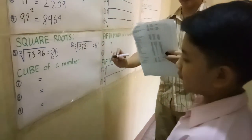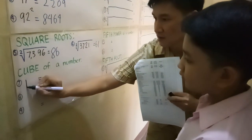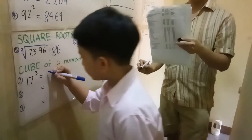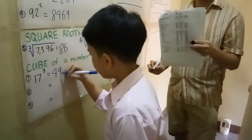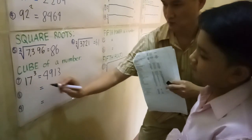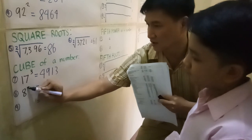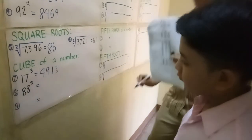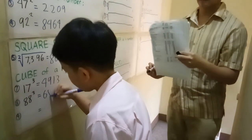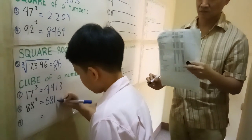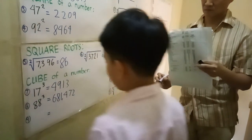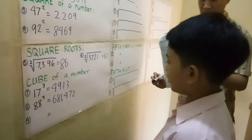We proceed to the cube of a number. What is 17 cubed? 4, 9, 1, 3. Good job. What is 88 cubed? 681,472. Good job.